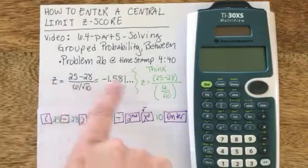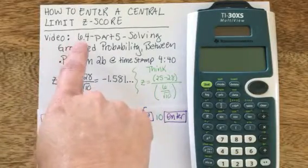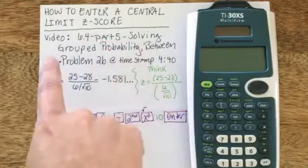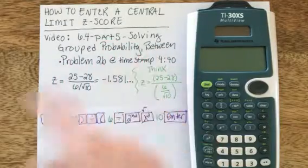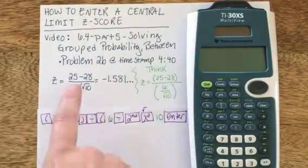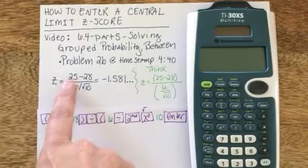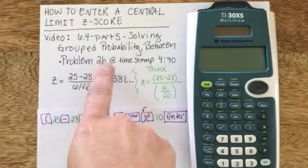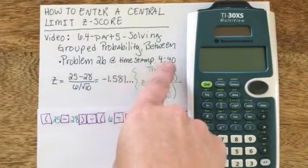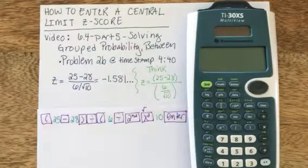The problem I'm going to be solving I took from my video titled 6.4 Part 5, Solving Group Probability Between, because this probability problem was actually between two different values, 25 being one of them. Specifically it's problem 2b, which is at timestamp 4 minutes and 40 seconds into the video.